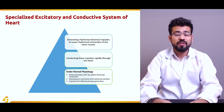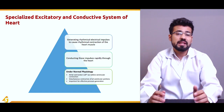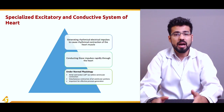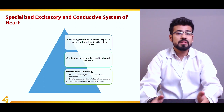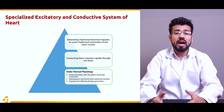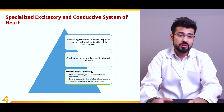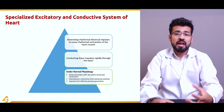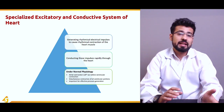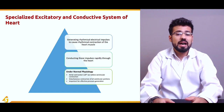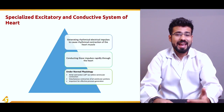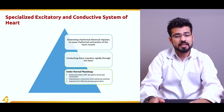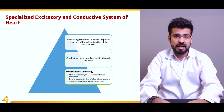The heart plays a very important function — providing oxygen to carry out every single metabolic process that occurs in the mitochondria. Oxygen is provided by the heart. In order to provide oxygen to every single cell, tissue, and organ, the heart needs to function properly. The specialized excitatory and conductive system plays a very important role: the generation of rhythmical impulses causes the contraction of the heart. These electrical impulses are conducted throughout the heart very rapidly.